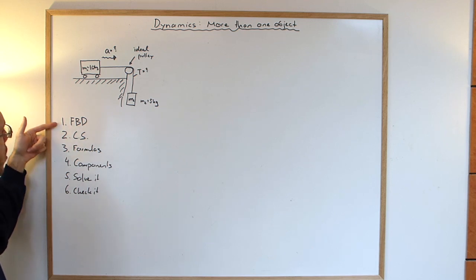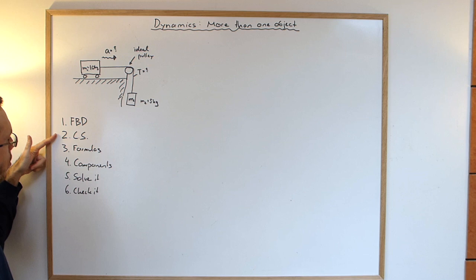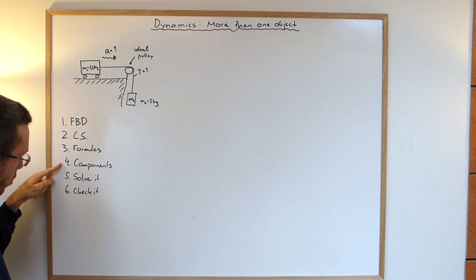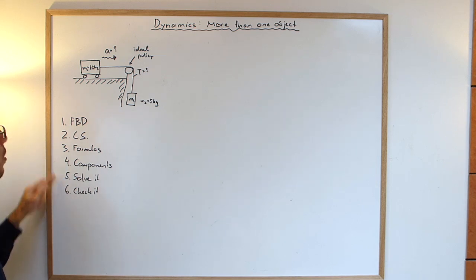I have the same procedure as I had for one object. That is, first step is to find the free body diagram, then select the coordinate system, then write down the formulas you're going to be using, then look at the components, fifth solve it and then check it.